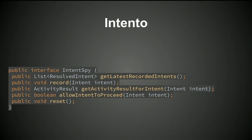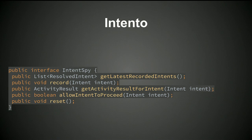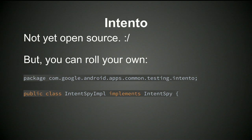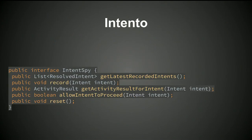Another interesting thing about Espresso: if you're familiar with Android development, there's this thing called an Intent — a message passing interface to launch activities across multiple processes. There's an interface that comes with Espresso called IntentSpy, which lets you record intents that are issued and say whether you want them to proceed. For example, if you have a call button and you don't want the dialer app to come up but you want to make sure the right intent was issued, you can block the intent, record it, and do an assertion on it. There's no open source implementation, but you can roll your own using their package name and calling it IntentsImpl, and it will automatically get loaded.